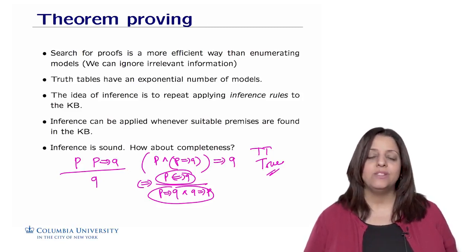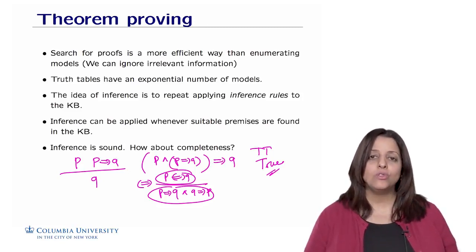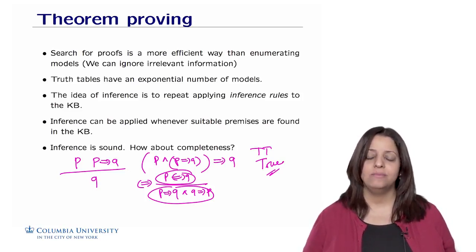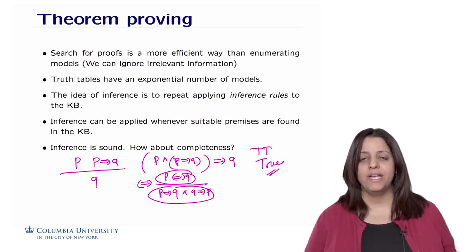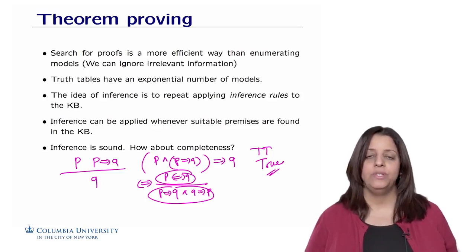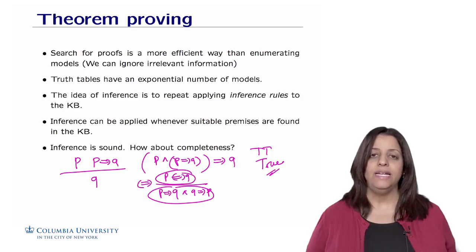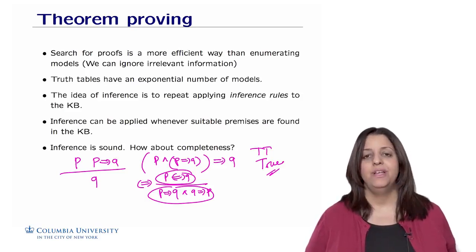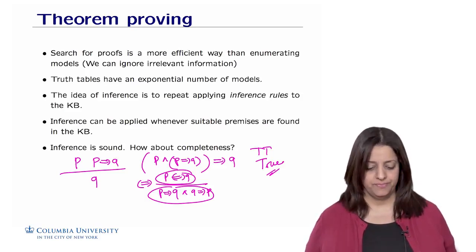For completeness, what we want to prove is that all true propositions out there are provable. This makes the knowledge representation larger — we need to really make sure that all possible entailed formulas are inferred by the system, which is more difficult to prove.